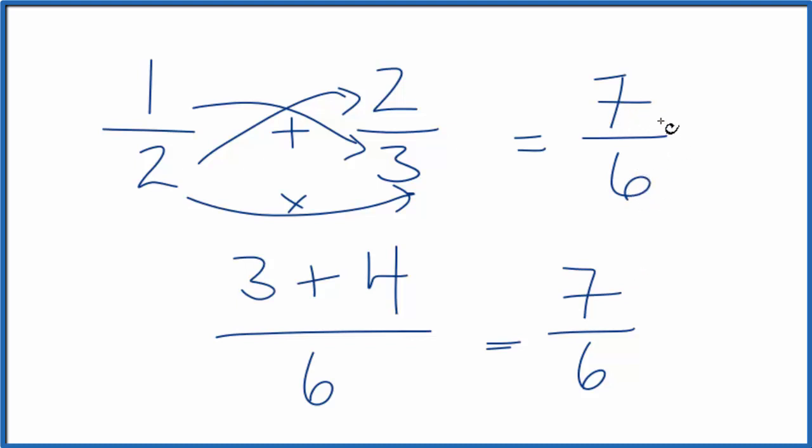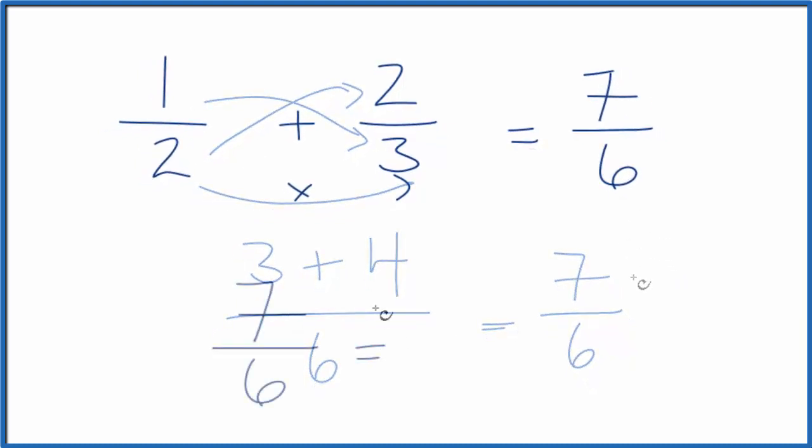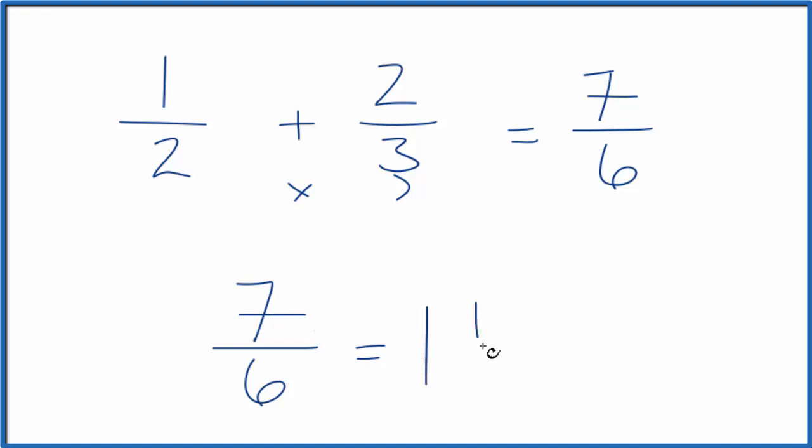One last thing. This is an improper fraction. The seven, that's larger than the six. Let's change it to a mixed fraction also. So six goes into seven one time with one left over, so we have one and one-sixths. You can check that. One times six, that's six plus one is seven. So seven-sixths.